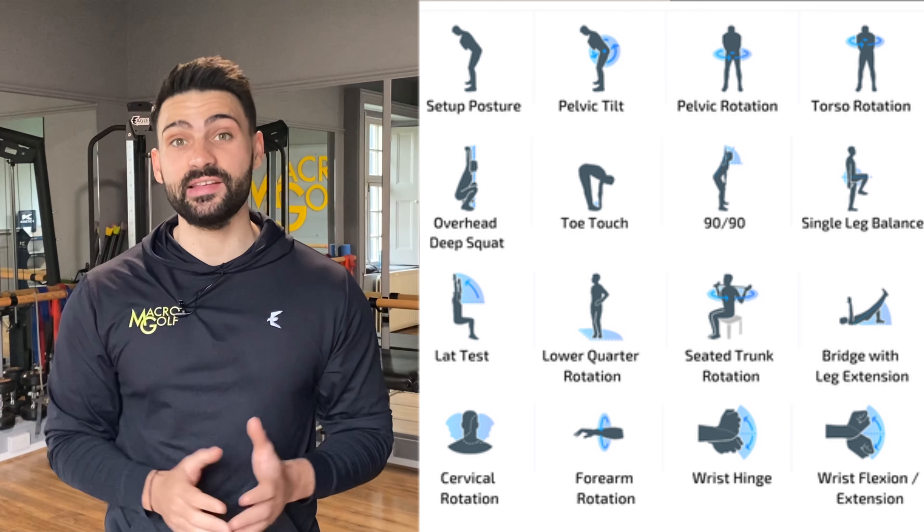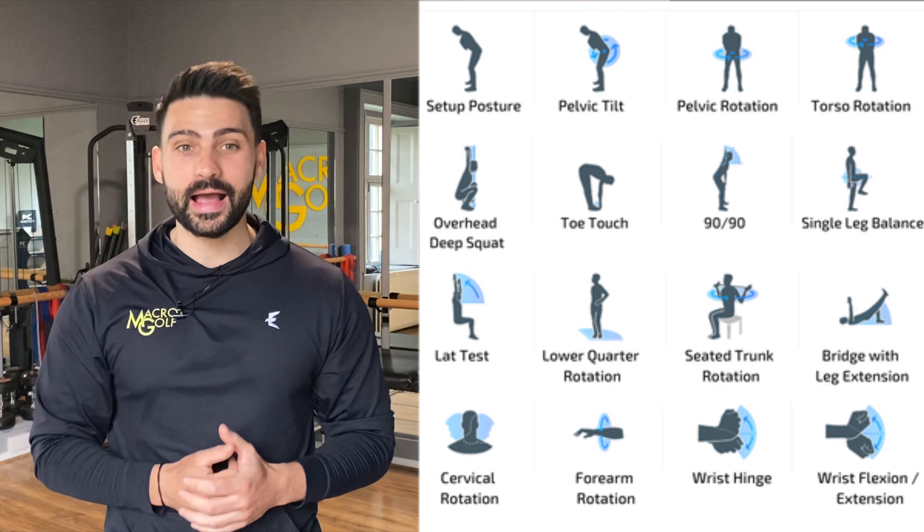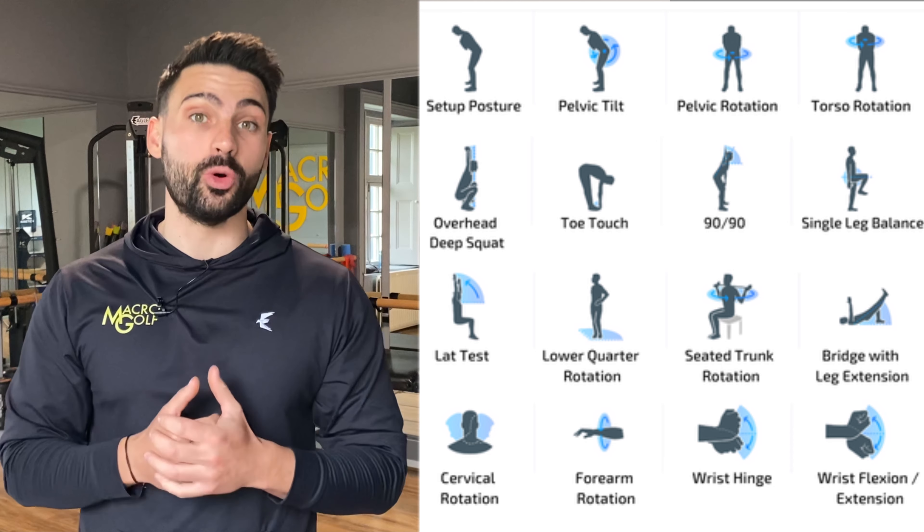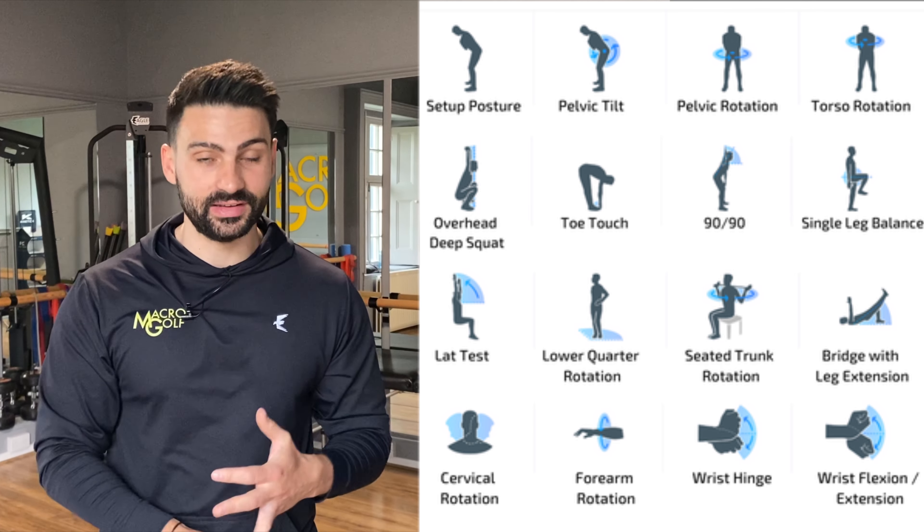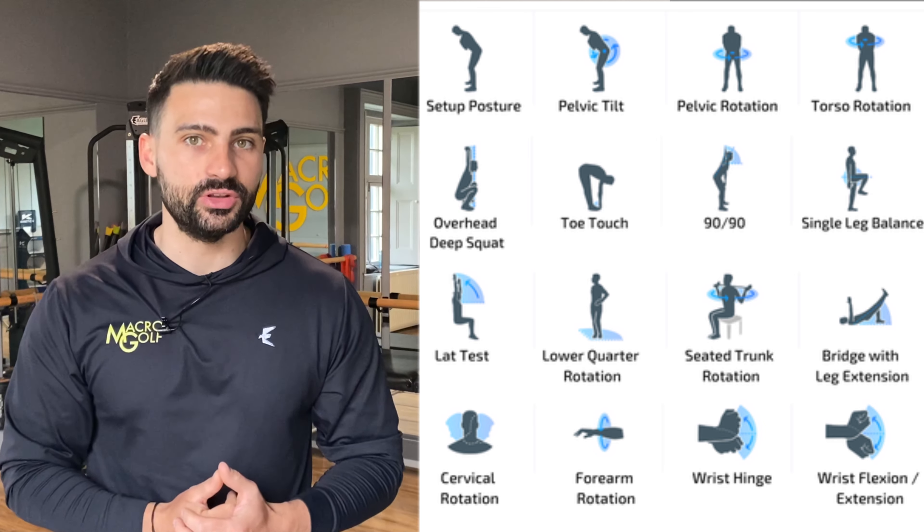The original TPI assessment has 16 different tests covering mobility, stability, balance, coordination, and control. The goal is to see if there are gaps in your movement affecting how you swing the golf club — any restrictions or weaknesses requiring compensation. Normally you'd find a TPI certified coach; they take you through the assessment, determine pass or fail, input it into the algorithm, and it produces a golf fitness handicap and recommendations for your golf coach.